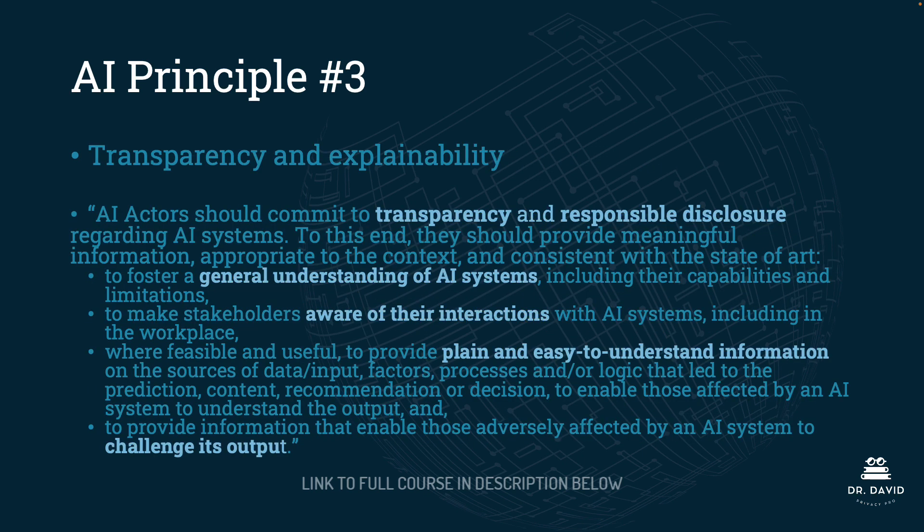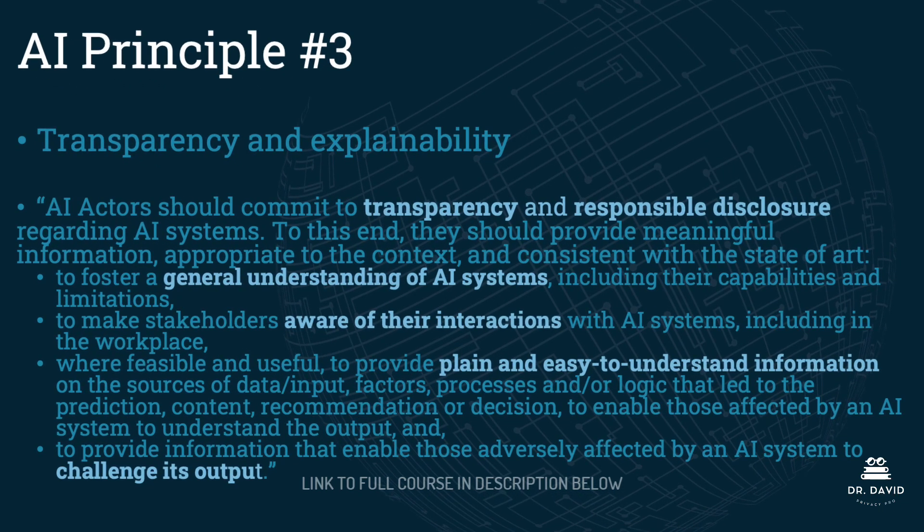AI principle number three is transparency and explainability. AI actors should commit to transparency and responsible disclosure regarding AI systems. To this end, they should provide meaningful information appropriate to the context to foster a general understanding of AI systems, including their capabilities and limitations; to make stakeholders aware of their interactions with AI systems, including in the workplace; and where feasible and useful, to provide plain and easy-to-understand information on the sources of data, inputs, factors, processes, and logic that led to a prediction, content, recommendation, or decision, to enable those affected to understand the output.